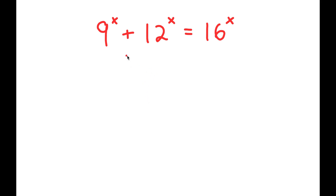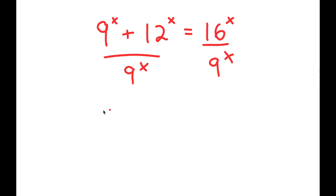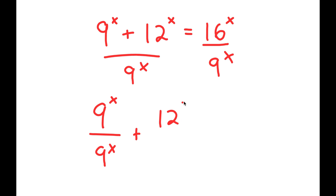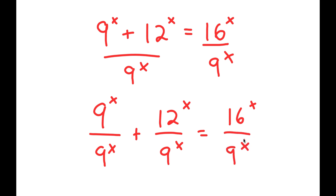So what I'm going to do is first start by dividing both sides by 9 to the power of x. So this means that I get 9 to the power of x over 9 to the power of x, plus 12 to the power of x over 9 to the power of x, is equal to 16 to the power of x over 9 to the power of x.